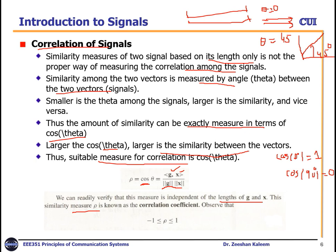This similarity measure is known as the correlation coefficient, rho, which lies between minus one and one. Rho equals minus one is the minimum case when vectors are in opposite directions — cos(180°) equals minus one. When rho equals one, the vectors are similar and have maximum correlation.